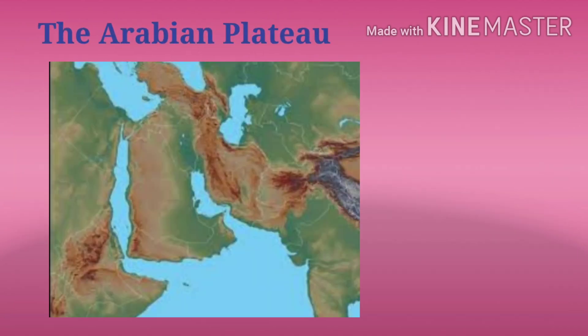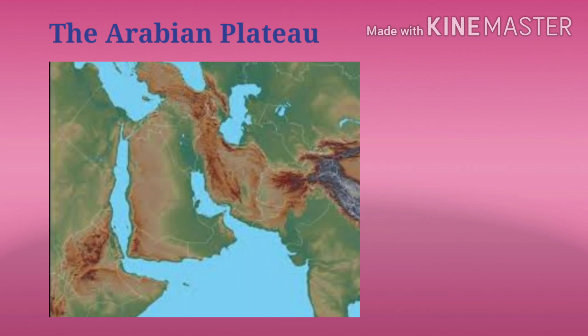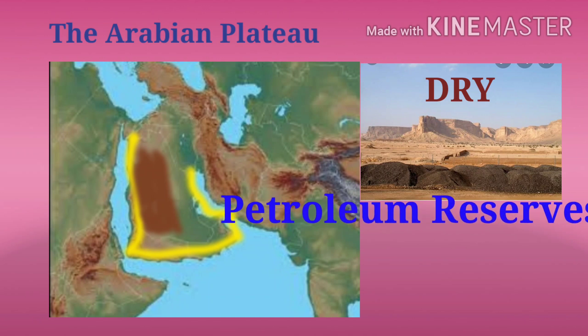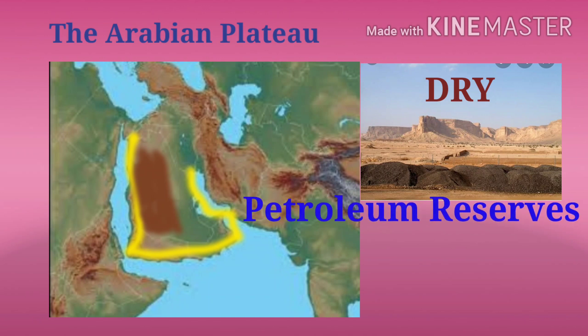The first one, the Arabian Plateau, is located in the Arabian Peninsula covering most part of the country of Saudi Arabia. It is a dry plateau because it lies in the region of low rainfall and it has no rivers. Its importance to the world lies in the fact that huge petroleum reserves were discovered here in the 20th century.